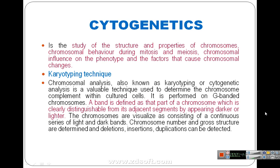Karyotyping determines the chromosome complement within cultured cells. It is performed on G-banded chromosomes. When we stain a chromosome, there are G bands that appear. A band is defined as the part of a chromosome which is clearly distinguishable from its adjacent segments by appearing darker or lighter after staining.